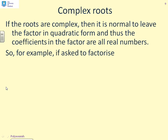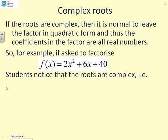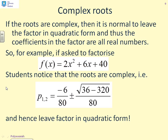What if the roots are complex? Well, if you've got complex roots, it's normal to leave the factor in quadratic form. Don't try and bring it down to a straight line equation. It won't work. And, thus, the coefficients in the factor remain as real numbers. So, for example, if you're asked to factorise this, 2x squared plus 6x plus 40, when you substitute it into the formula for the roots, what you will get is the following. The roots are given by minus 6 over 80 plus and minus the square root of 36 minus 320 over 80. Or, if I expand this out, minus 6 over 80 plus and minus the square root, and here's where we've got a problem, 284 with a minus over 80. You need the square root of a minus number. And that's not going to give you a real solution. So, if that happens, i.e. if you get a minus sign underneath the square root, just leave this in quadratic form. So, don't try and reduce it to any simpler factors.